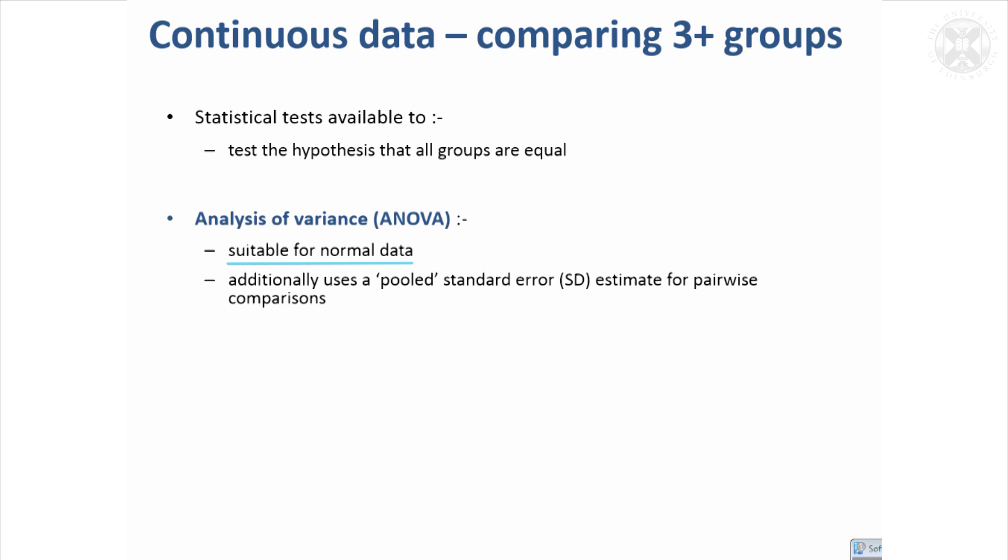One thing to note is whereas with the t-test it's capable of using different measures of variability for the different groups, an ANOVA generally uses a pooled standard deviation or standard error for the different groups it's comparing. It would be too difficult for it to manage different variability for each of the groups.